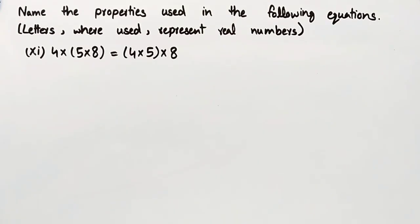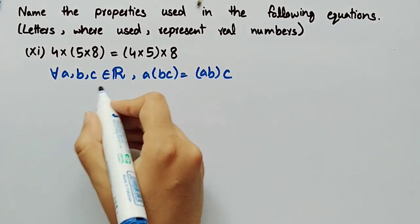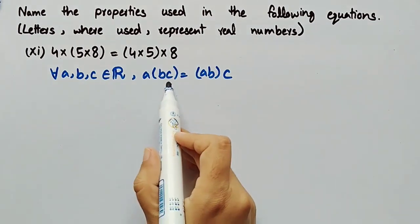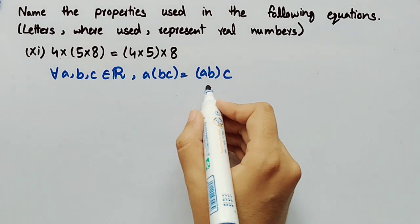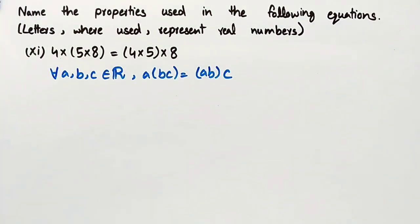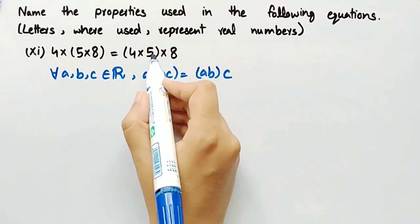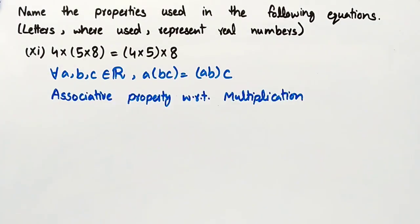Equation number 11 is 4 multiplied by (5 multiplied by 8) is equal to (4 multiplied by 5) multiplied by 8. From the associative law for multiplication, for all A, B, C belonging to the set of real numbers, A multiplied by (BC) is equal to (AB) multiplied by C. The property used in this equation is the associative property with respect to multiplication.